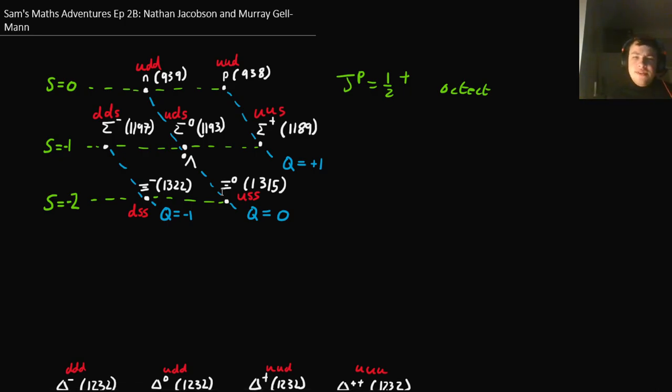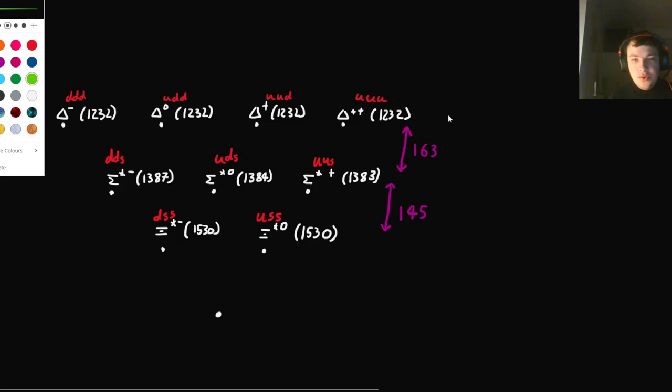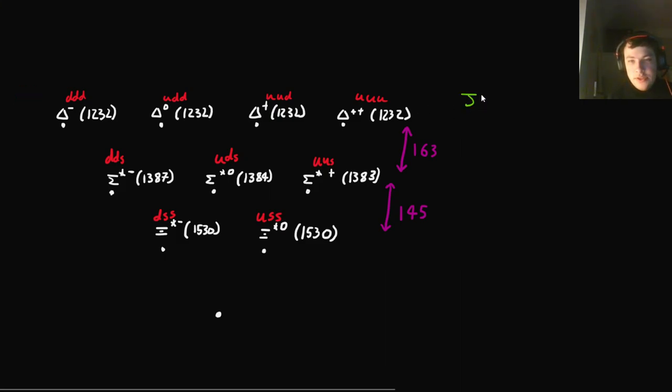That basically uses only, I think, two or three parameters. And it fits the masses of all these pretty well. But those were not the only baryons. We also had another nine baryons. And these were JP equals 3/2 plus.